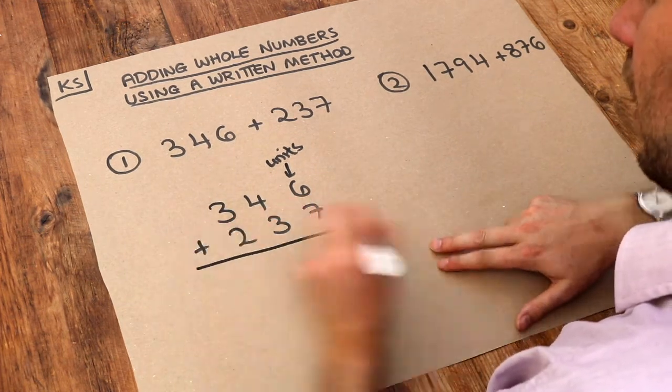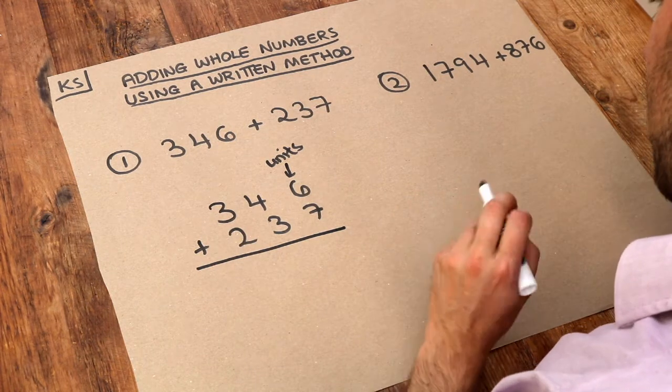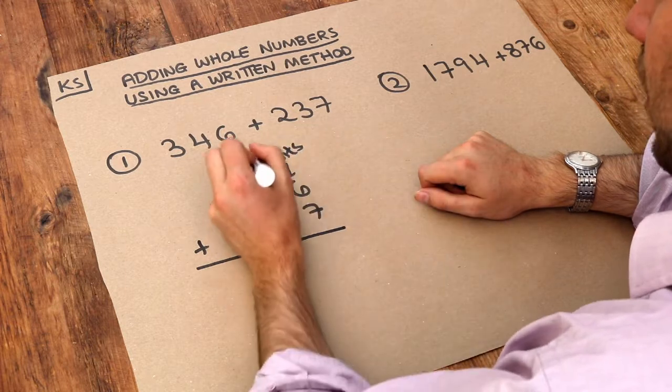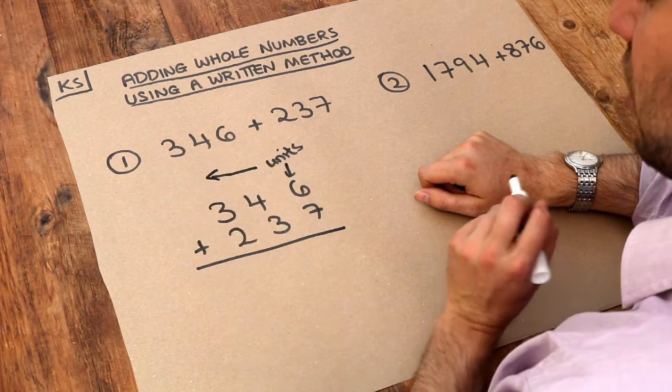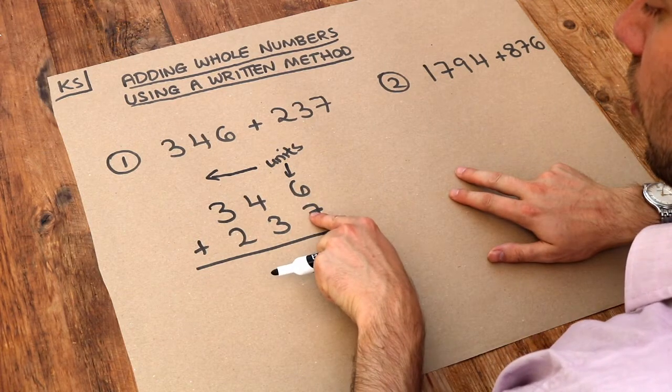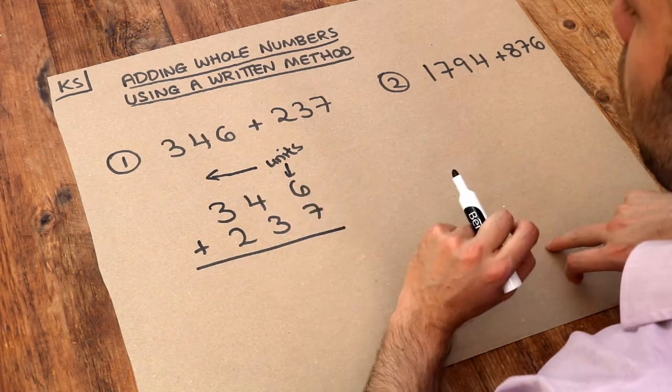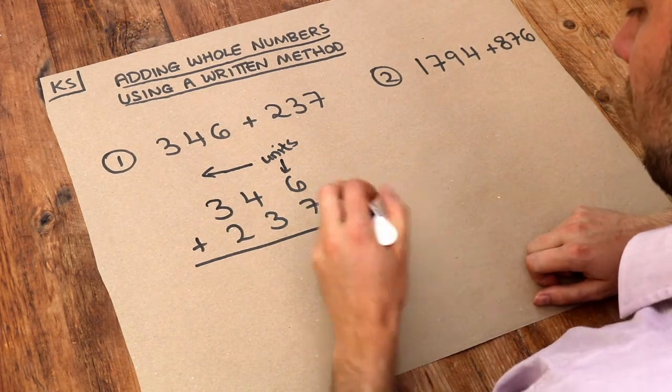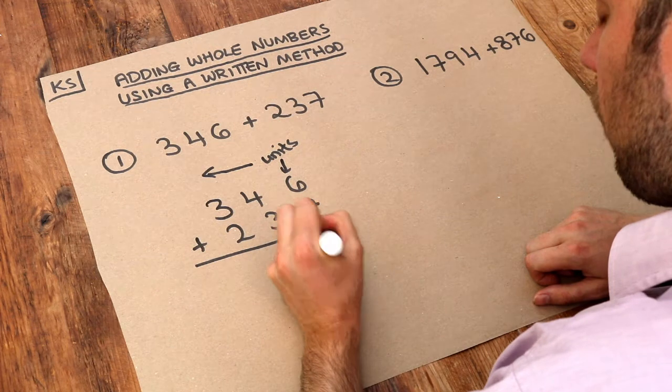Now what we do is put a line under it like that, and then we're going to add the digits in each row starting from the right. So we're going to start from the right and gradually work our way to the left. So we do 6 plus 7 which is 13. And what we do with the 13 is put the units digit of that result here. So we put the 3 here.